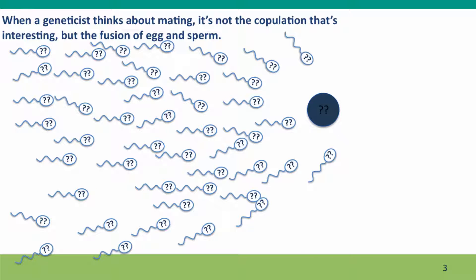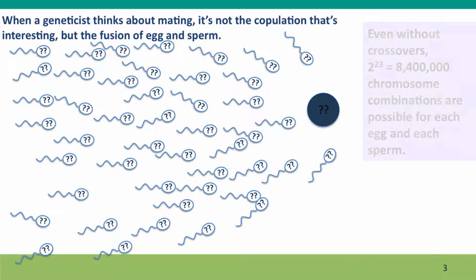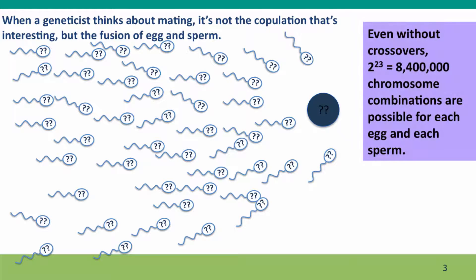When a geneticist thinks about mating, they don't think about sex the way sex is in the movies. It's not the copulation that geneticists care about — it's the fusion of eggs and sperm. And this is actually a potentially very complicated genetic process because the genotypes of eggs and sperm can be so diverse.